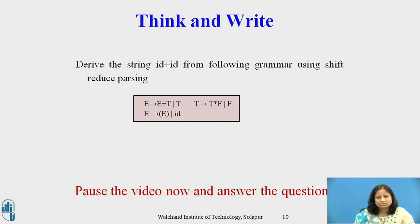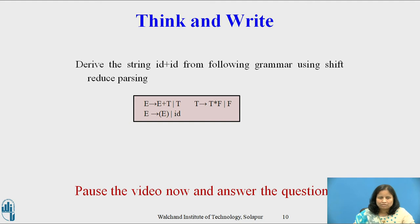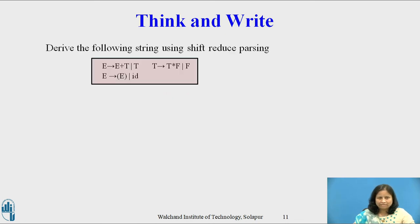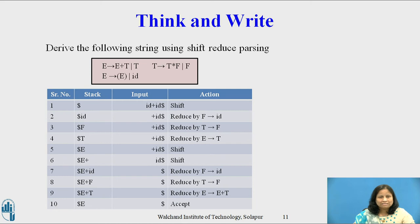Now we have considered shift-reduce parsing and the stack implementation of shift-reduce parsing. Pause this video and reflect on this question for a minute or two and write your response. Once you have written the answer, then restart playing the video. The question is: derive the string id plus id from the following grammar using shift-reduce parsing. As this grammar is unambiguous, there will be only one sequence of steps a shift-reduce parser might take, as shown in the table.